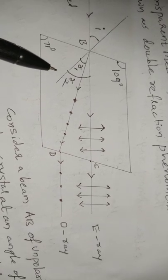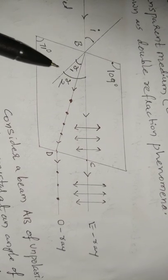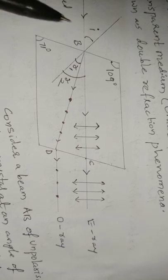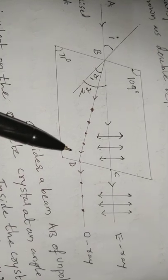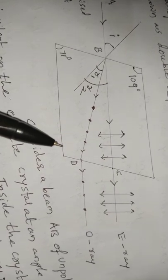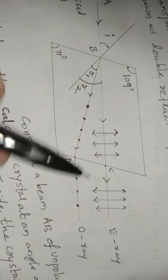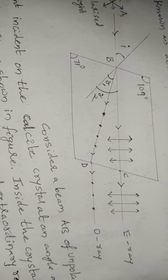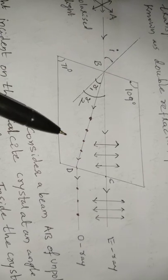In calcite crystal, the refractive index of the ordinary ray is the same for all angles of incidence, while the refractive index of the extraordinary ray varies with the angle of incidence. Therefore, the velocity of the ordinary ray is the same in all directions, while the extraordinary ray moves in different directions with different speeds.